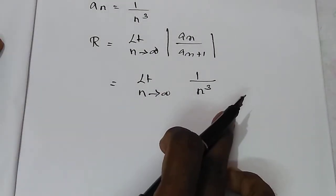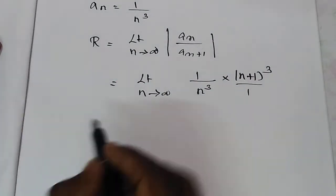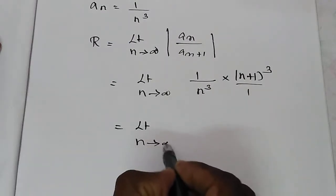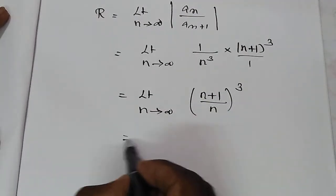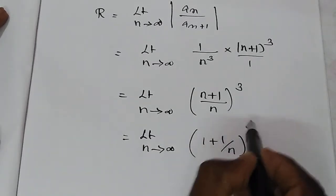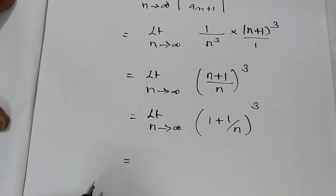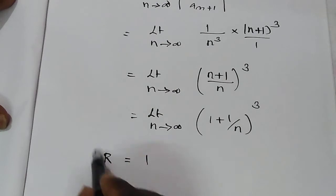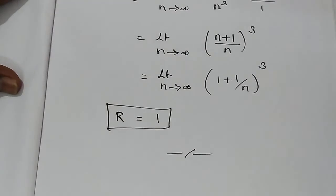We evaluate n plus 1 by n whole cube. Taking limit n tends to infinity of 1 plus 1 by n whole cube. As n tends to infinity, 1 by n tends to 0, so the limit equals 1. Therefore r is equal to 1.